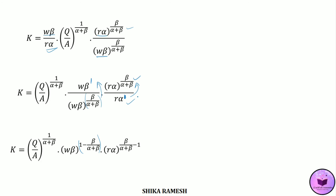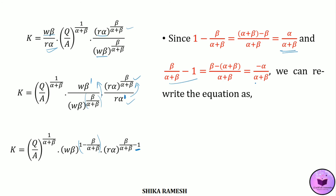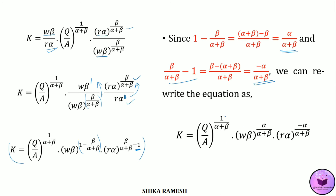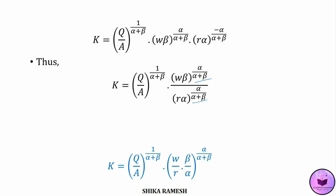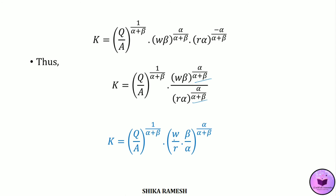Bringing the denominator terms onto the numerator: wβ raised to 1 - β/(α+β) = wβ raised to α/(α+β), and rα raised to β/(α+β) - 1 = rα raised to -α/(α+β). Since the exponent of rα is negative, we bring that term to the denominator: K = (Q/A)^(1/(α+β)) · (wβ)^(α/(α+β)) / (rα)^(α/(α+β)). With further simplification: K = (Q/A)^(1/(α+β)) · (w/r · β/α)^(α/(α+β)).